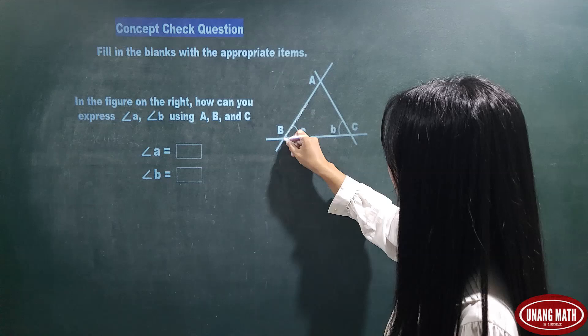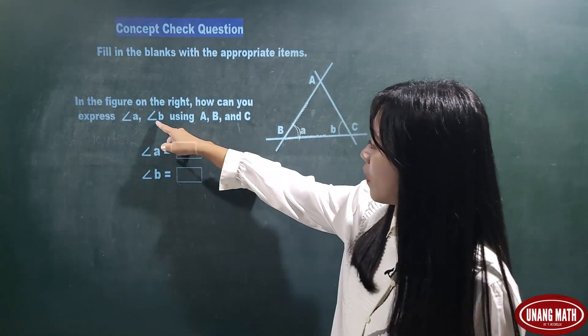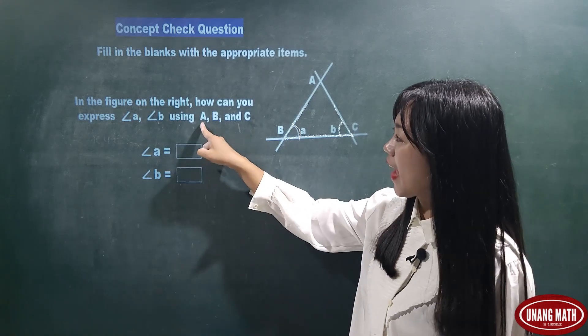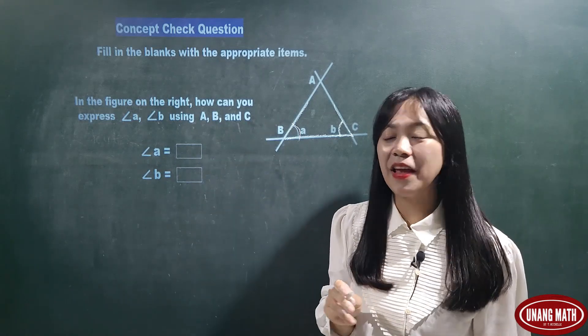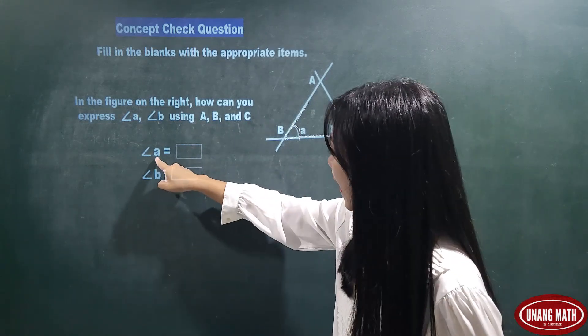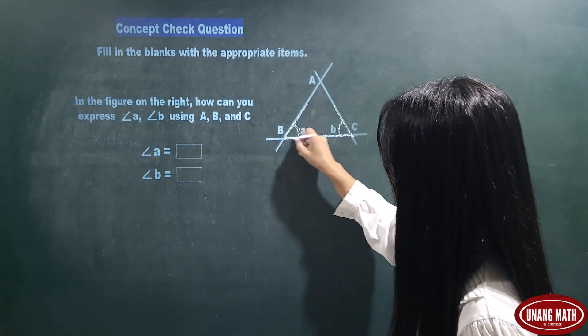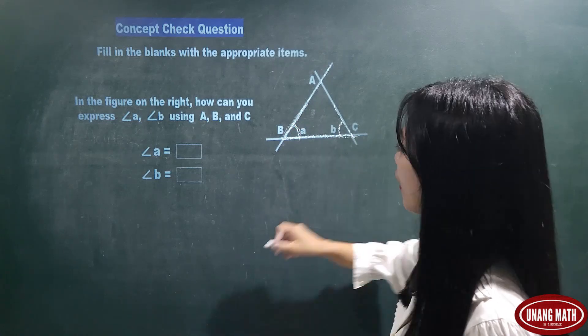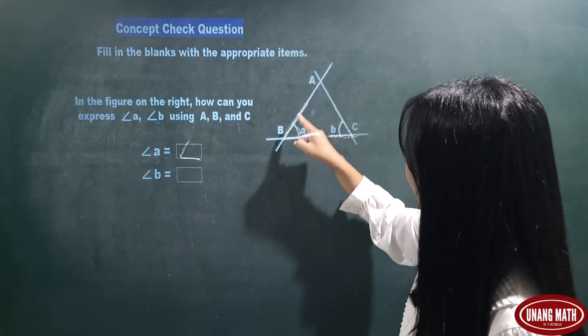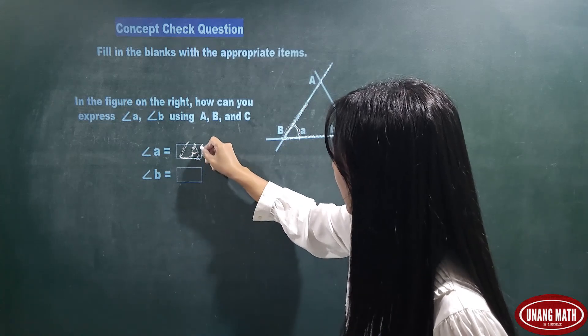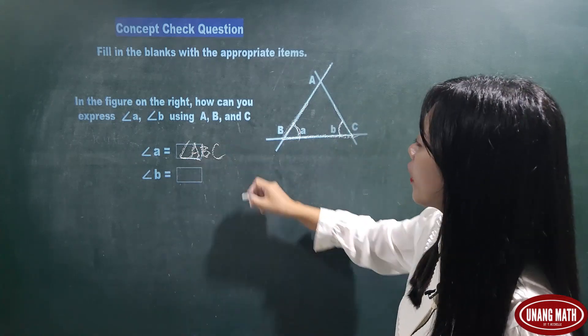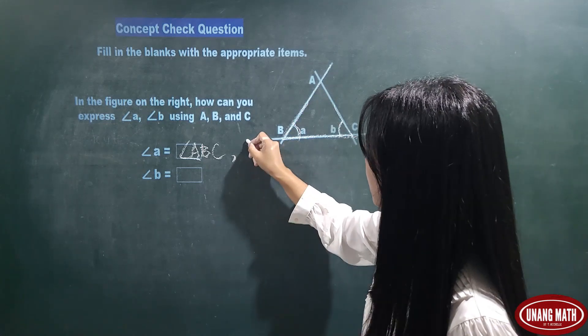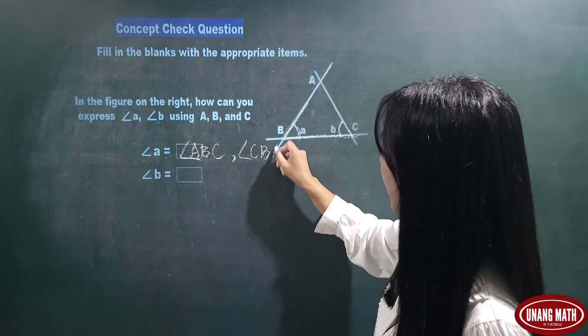So, where's angle A? This angle. Okay, angle B or this angle using A, B, and C. So angle A or this angle is equal to angle ABC or we can say angle CBA.